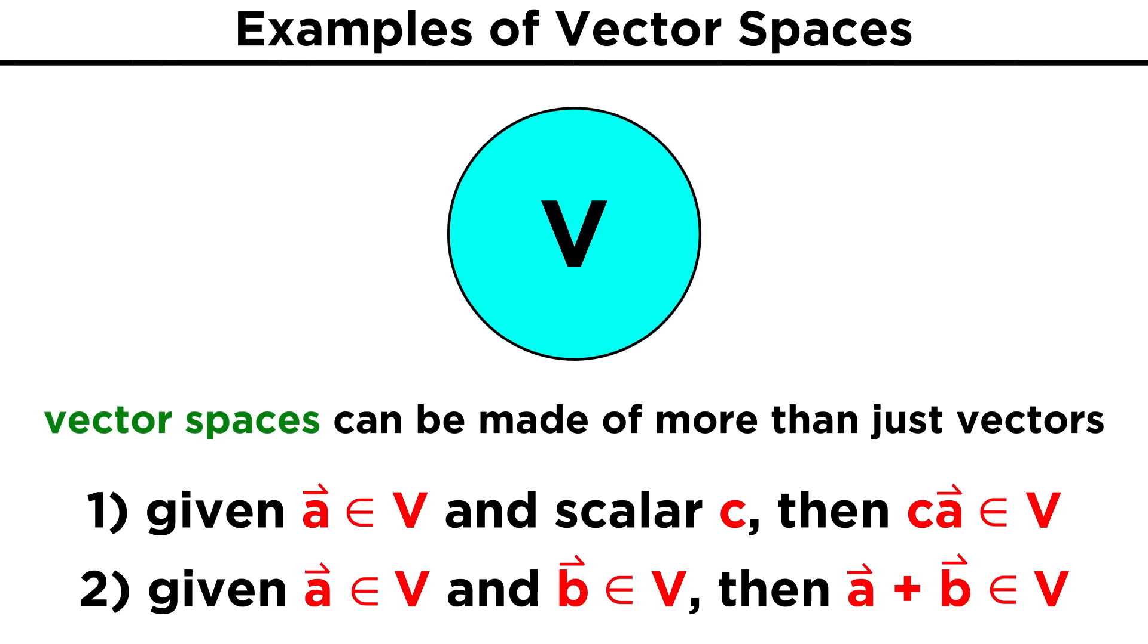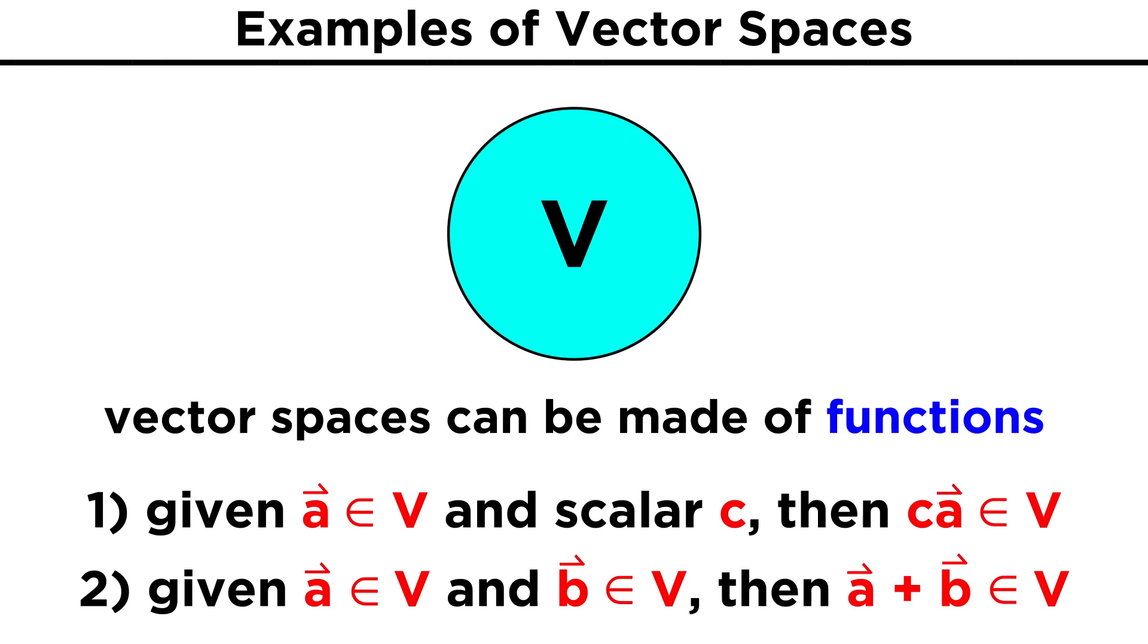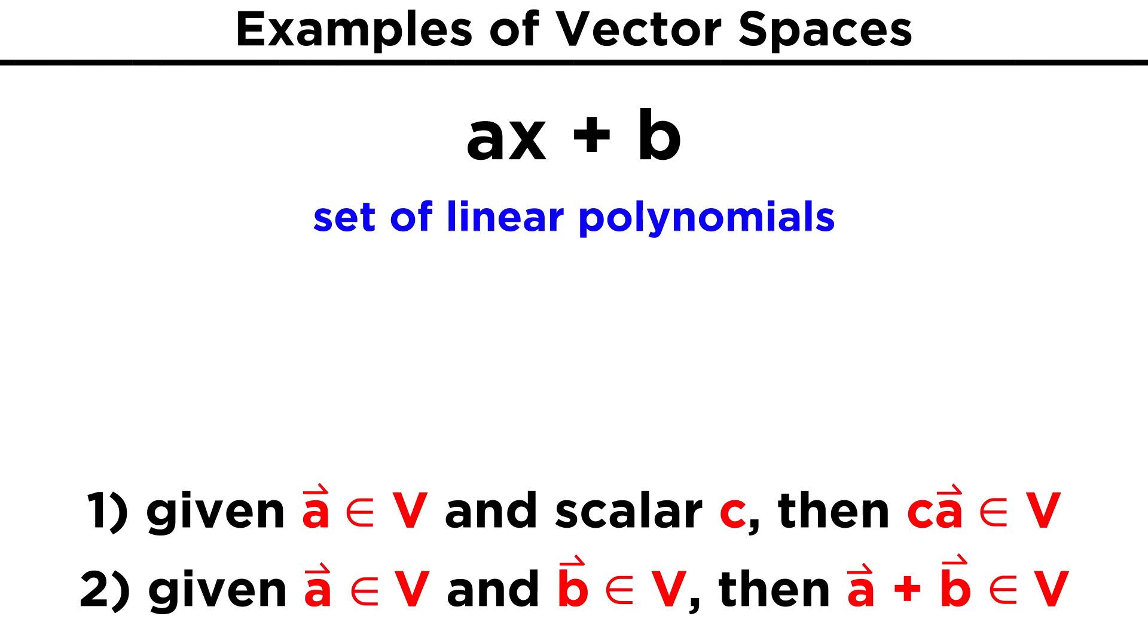So it would seem that vector spaces can actually be made of more than just vectors. In fact, we could define a vector space that was made up of functions if we wanted to. For example, let's take the set of linear polynomials in the form of ax plus b. If we multiply by a scalar c, we can distribute to get ca times x plus bc. Since we are dealing with real numbers, ca and bc will also be real, and the form of our equation is still a linear polynomial, so our result is still within the set.